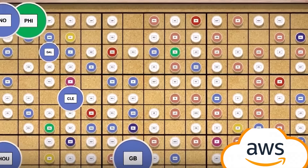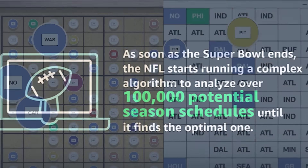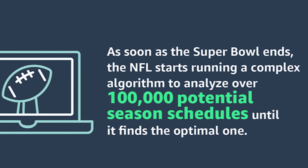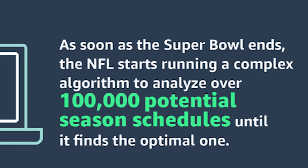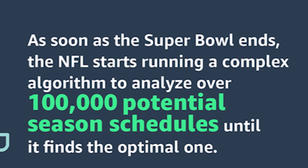The NFL schedule is made by a combination of set rules, complex algorithms, and a dedicated team. The rules are input into the algorithm and it spits out over a hundred thousand possible schedule combinations. These are then combed over by that dedicated team over the course of several months until they finally get the perfect — or imperfect — schedule.